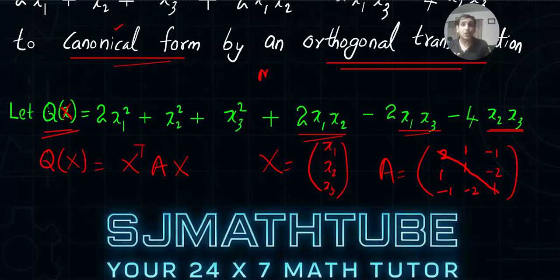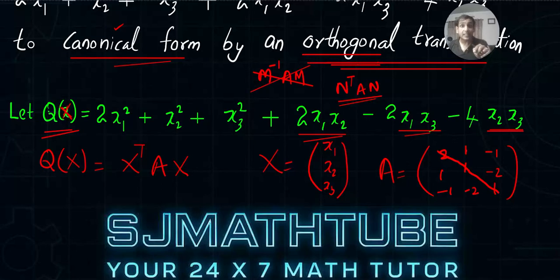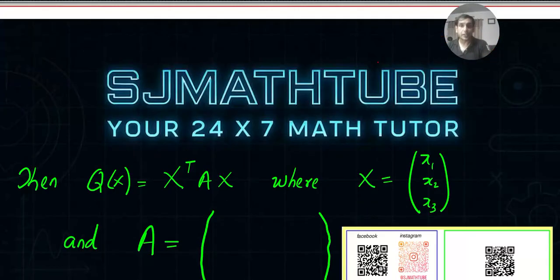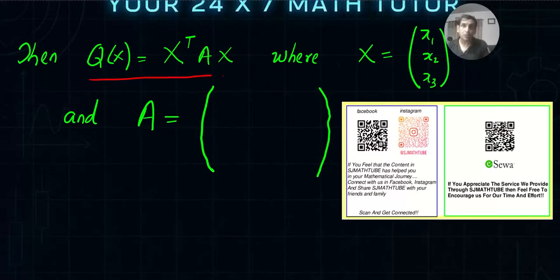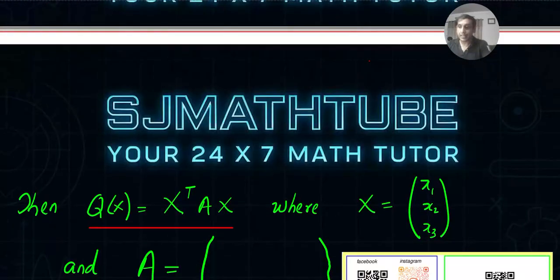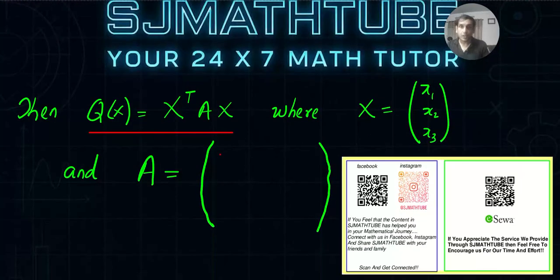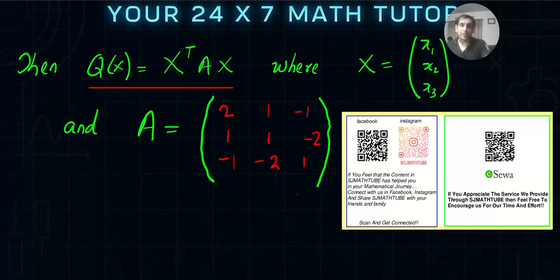Because the matrix is always symmetric, you can use N^T A N rather than M⁻¹ A M for the orthogonal transformation. If you haven't watched the previous video on orthogonal transformation, pause and watch it first. So we have Q(X) = x^T A x, where A is the matrix: [2, 1, −1; 1, 1, −2; −1, −2, 1]. This is a problem we solved in the previous video.